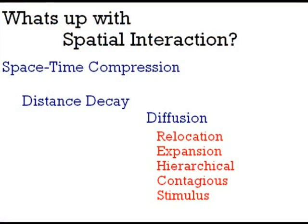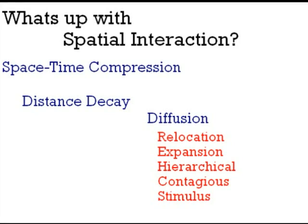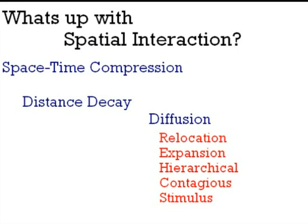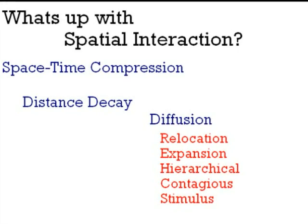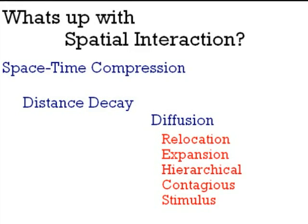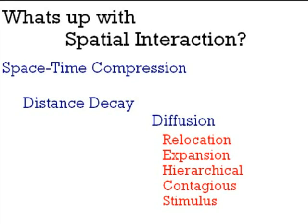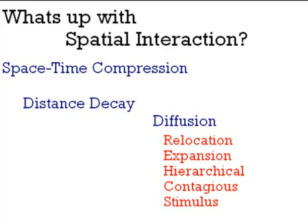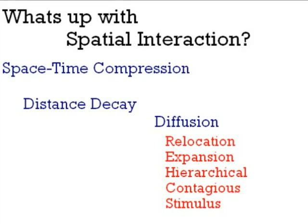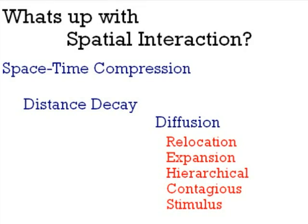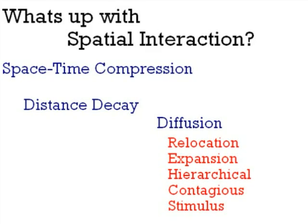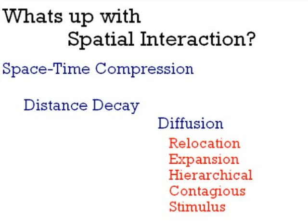Diffusion is the process by which a characteristic spreads across space from one place to another over time. The place from which an innovation originates is called a hearth. The spread of an idea through physical movement of people from one place to another is termed relocation diffusion. The spread of a feature from one place to another in a snowballing process is called expansion diffusion. One type of expansion diffusion is hierarchical diffusion — the spread of an idea from persons or nodes of authority or power to other persons or places.